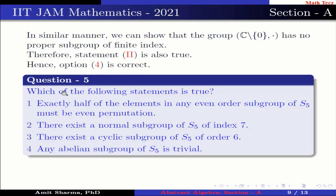Question number 5: Which of the following statements is true? Option 1: Exactly half of the elements in any even order subgroup of S5 must be even permutations. Option 2: There exists a normal subgroup of S5 of index 7. Option 3: There exists a cyclic subgroup of S5 of order 6. Option 4: Any abelian subgroup of S5 is trivial.